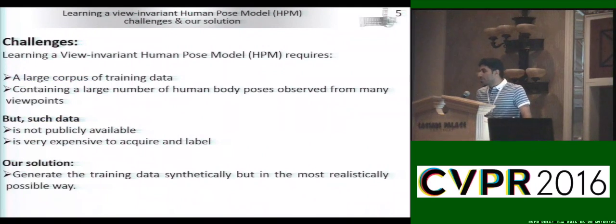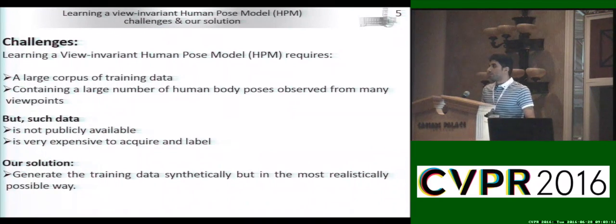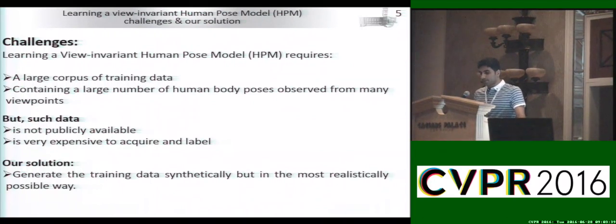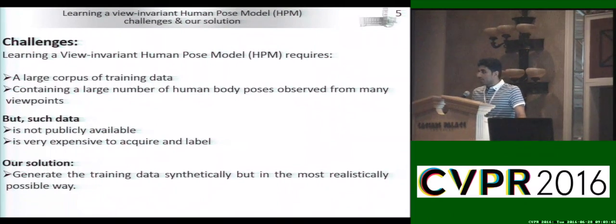However, learning such a deep CNN model requires a large amount of training data containing a large number of human poses observed from many viewpoints. Such data is not publicly available and is very expensive to acquire and label. Therefore, our solution is to generate the training data synthetically but in the most realistic way possible.